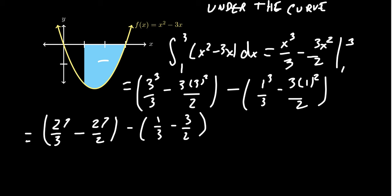Now, we could simplify 27/3, but since we already have a 1/3 right here, I'm just going to leave it as it is. And we're going to combine these common denominators right there. So you're going to end up with 27/3 - 1/3, which is 26/3.